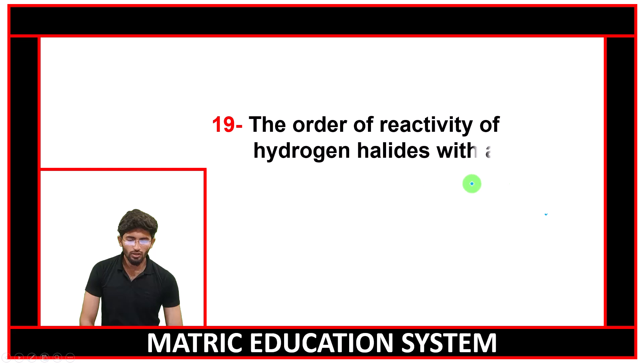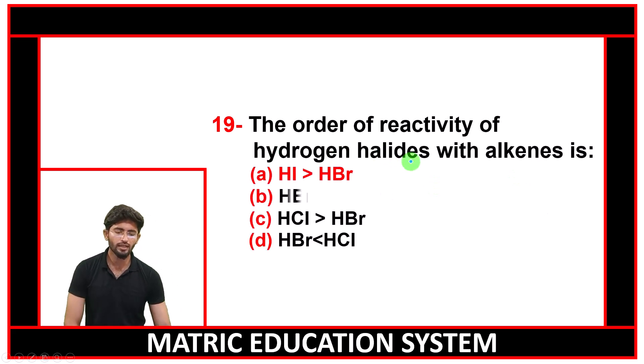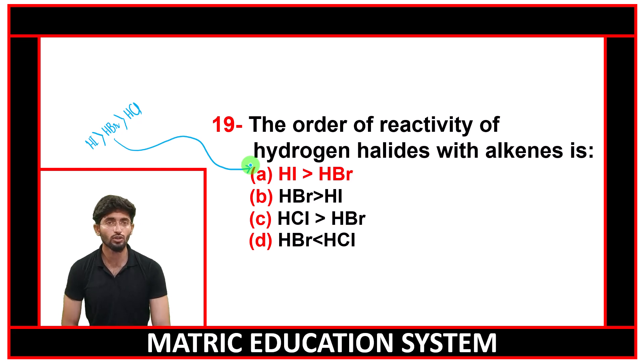The order of reactivity of hydrogen halides. The correct order of reactivity is hydrogen iodide is more reactive than hydrogen bromide, which is more reactive than hydrogen chloride. According to this reactivity order, hydrogen iodide is more reactive than hydrogen bromide is the correct option.